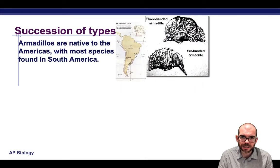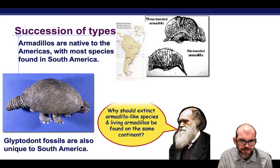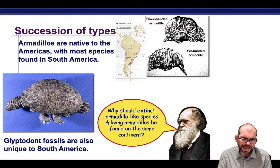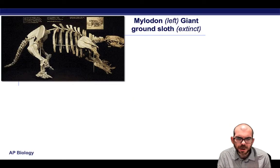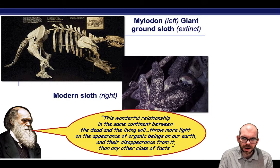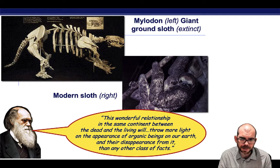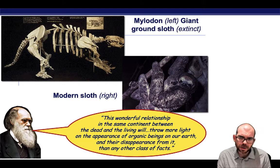When he got to the coast of South America, he noticed a succession of types — armadillos native to the Americas, with most species found in South America. He also noticed fossils of a very armadillo-like species. He wondered: why should extinct armadillo-like species and living armadillos be found in the exact same continent? He noticed this not only with armadillos but with sloths. Fossils of giant ground sloths were found, yet not a single one could be found alive, but modern sloths could be. Darwin pinpointed this as a central question to explain the diversity and appearance of life — why are some alive and some not?